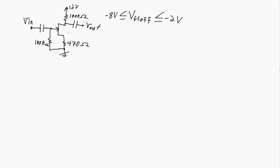If we look at the datasheet for a particular JFET — for example the 2N5459 — we find there is a range for VGS off, or VP. The IDSS is also going to have a range; it ranges between 4 milliamps and 16 milliamps. These are the actual ranges for a 2N5459.